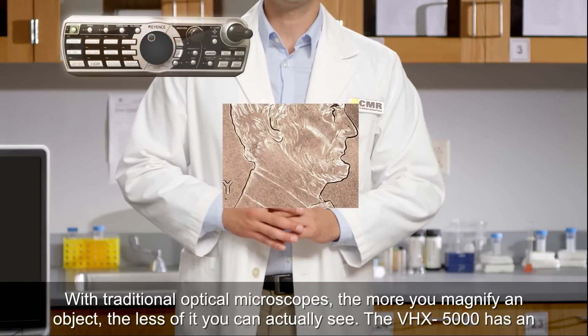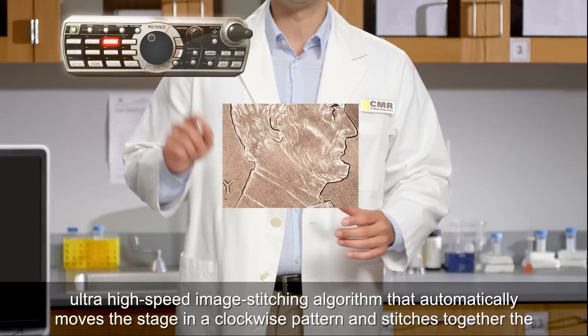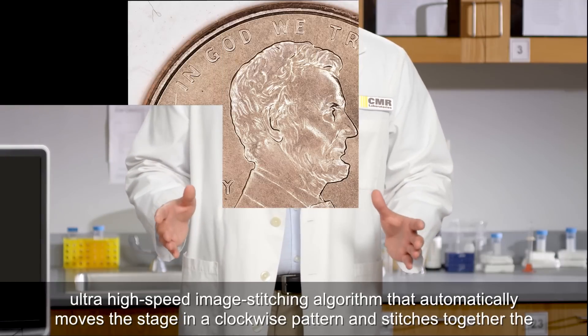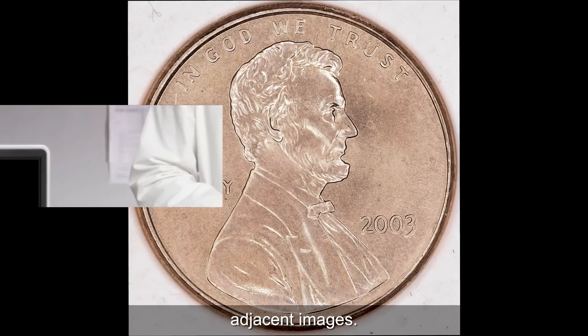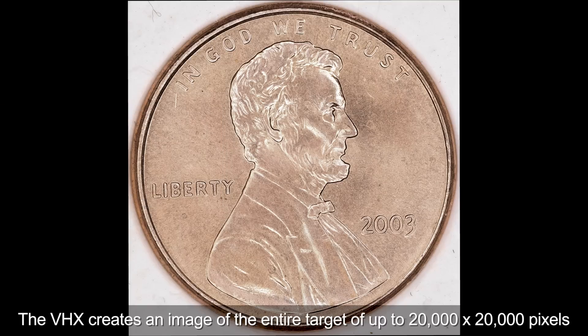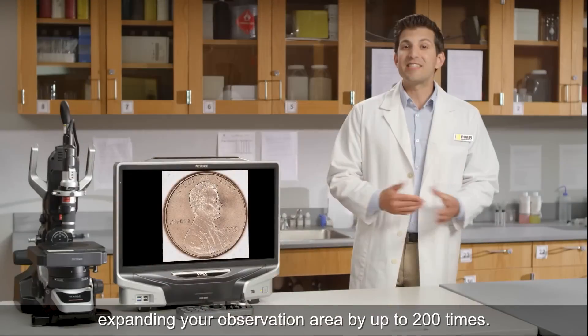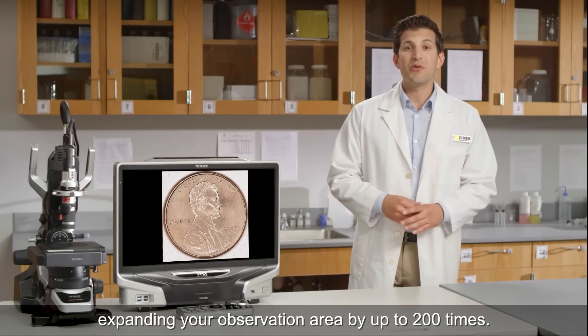The VHX5000 has an ultra-high-speed image stitching algorithm that automatically moves the stage in a clockwise pattern and stitches together the adjacent images. The VHX creates an image of the entire target of up to 20,000 by 20,000 pixels, expanding your observation area by up to 200 times.